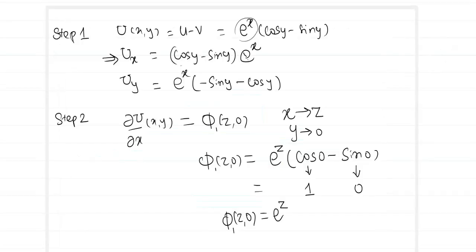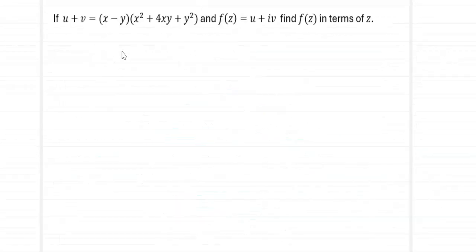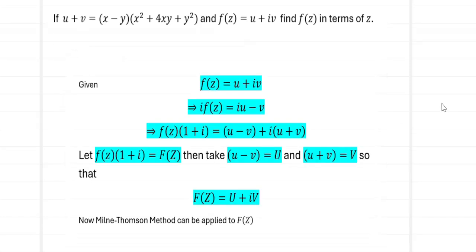Referring back to our framework: f(z) = u + iv; multiplying by i and adding gives f(z)(1 + i) = (u - v) + i(u + v). We define F(z) = f(z)·(1 + i), capital U = u - v, and capital V = u + v. Since u + v is given, it becomes capital V — the imaginary part of F(z). We apply the Milne Thomson method for capital V.